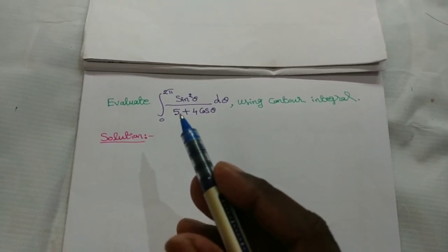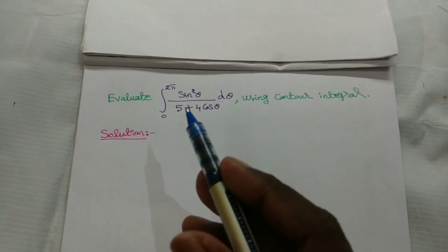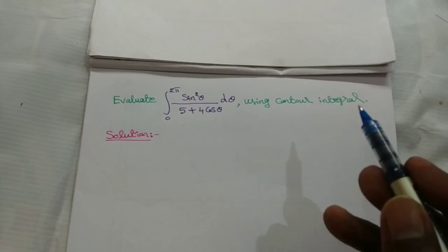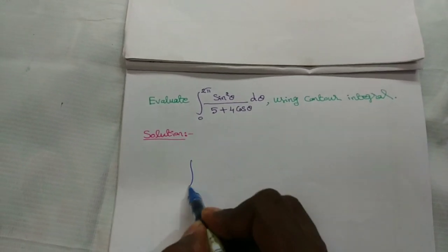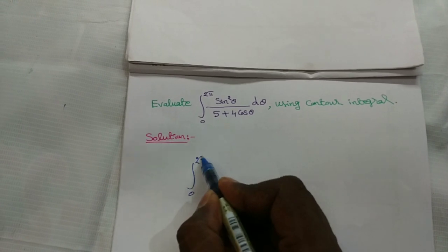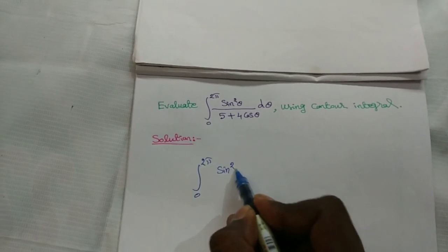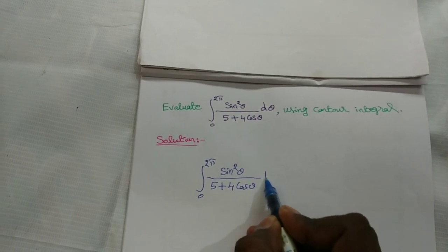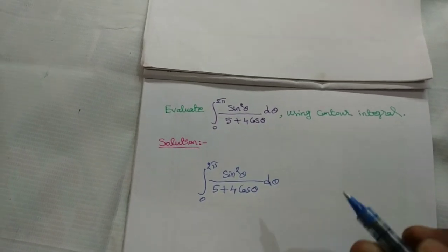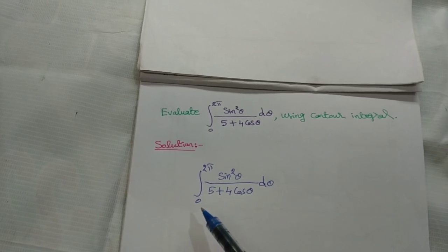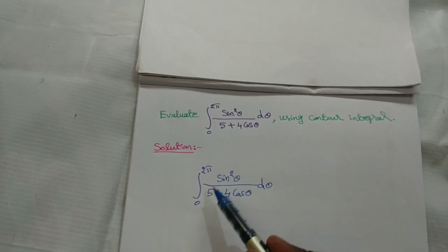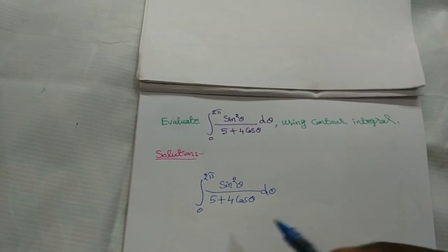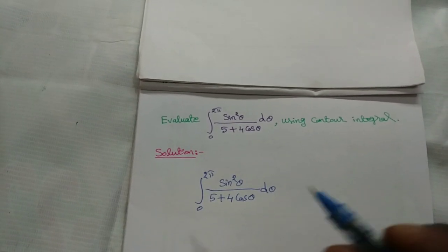Evaluate the integral from 0 to 2π of sin²θ divided by (5 + 4cosθ) dθ, using contour integration. The given integral has limits 0 to 2π and involves sine and cosine, therefore this is a contour integral of Type 1.